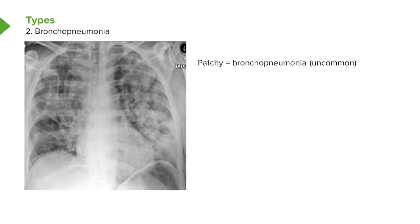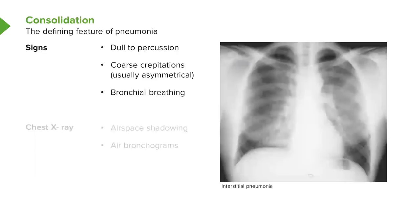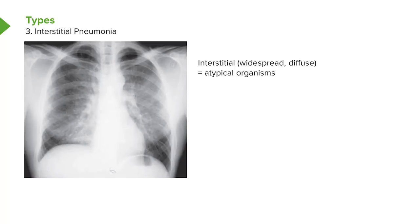A third pattern of pneumonia is interstitial pneumonia. The chest X-ray may not appear obviously abnormal, but there is a widespread reticular nodular infiltrate in both lungs — very subtle. This represents a diffuse pneumonia and is commonly associated with atypical organisms such as mycoplasma and chlamydia. The key point is that pneumonia always involves some form of alveolar consolidation — usually lobar, but potentially interstitial or bronchopneumonia.